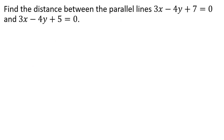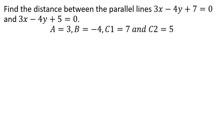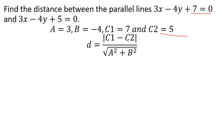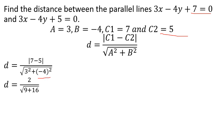Find the distance between the two parallel lines 3x - 4y + 7 = 0 and 3x - 4y + 5 = 0. Here a = 3, b = -4, c1 = 7, c2 = 5. Distance = |c1 - c2| / √(a² + b²) = |7 - 5| / √(9 + 16) = 2 / √25 = 2/5.